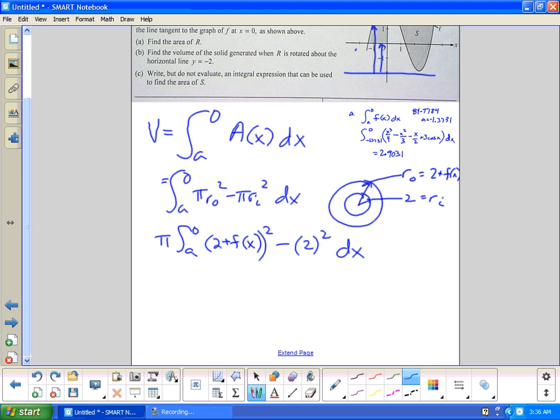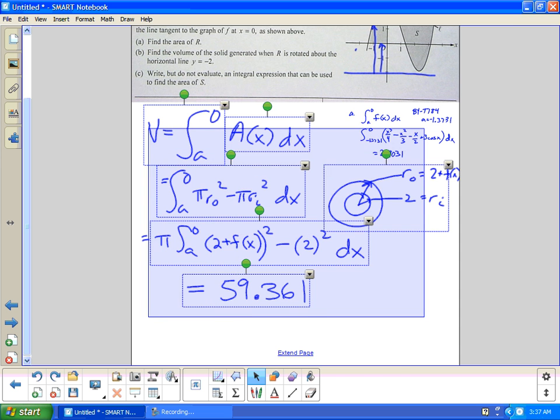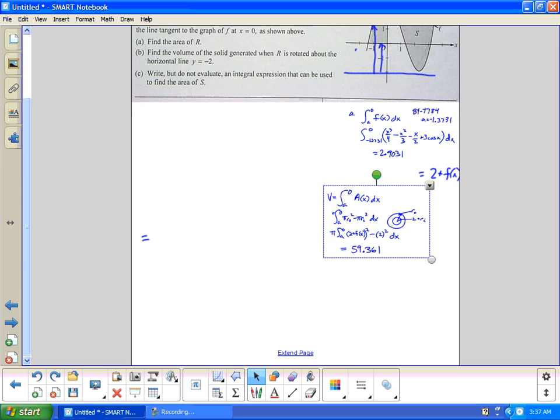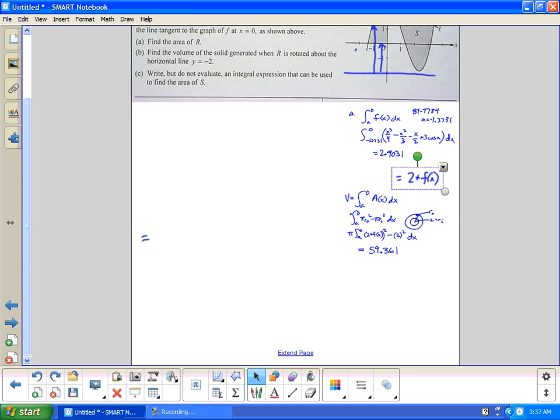So again a to zero, pi ro squared minus pi ri squared dx. a to zero, pi out, and I get ro is 2 plus f of x quantity squared minus 2 squared dx. Again this is the problem where I can just input in my calculator and a is still negative 1.3731 from the previous problem. If I input this in my calculator and I hit calculate and I take three decimal places I get 51.361. That is letter B. Group that and shrink that down, get that over here.